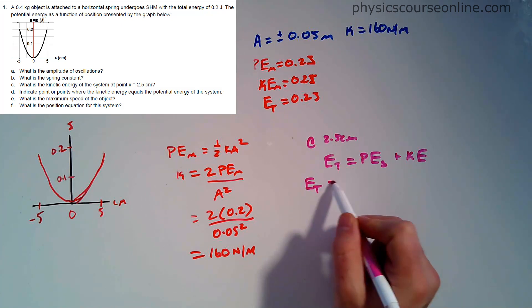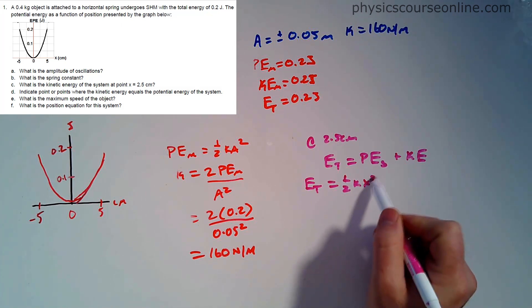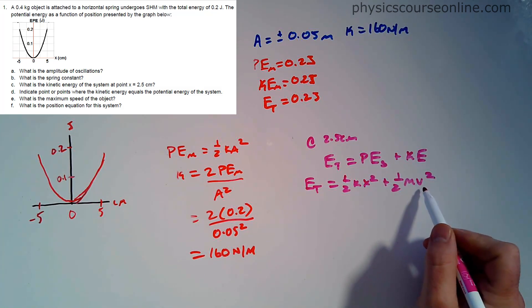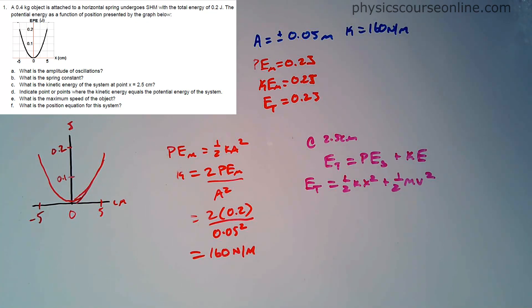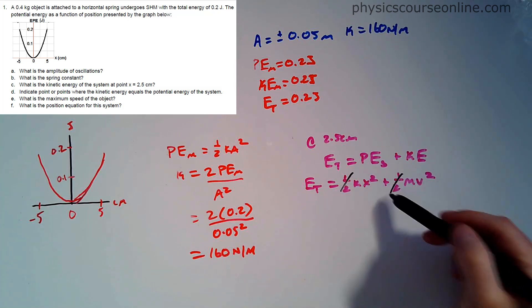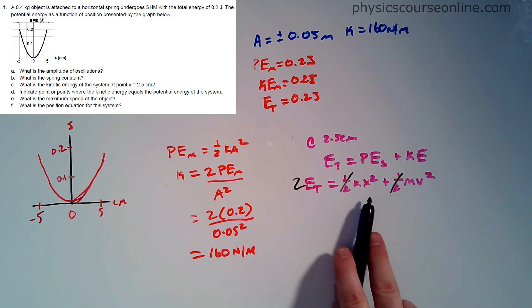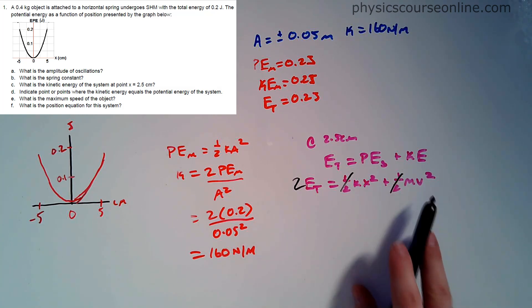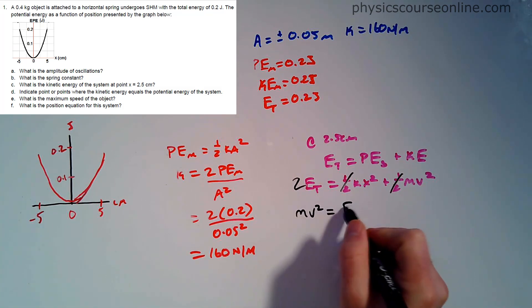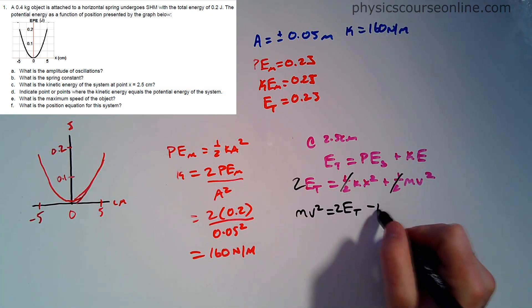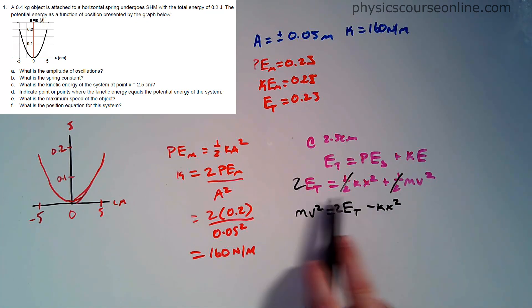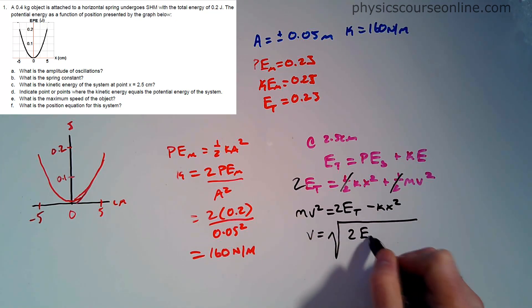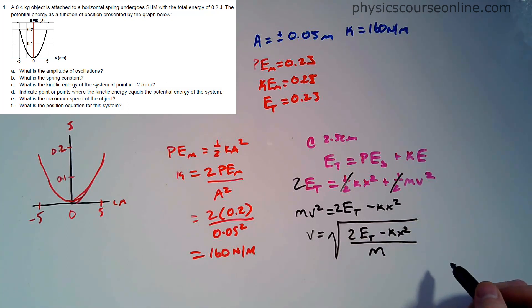We can open both of these up and solve for the velocity at that location. Total energy is equal to one half kx squared plus one half mv squared. Neither of these are maxes, so we don't have a subscript here or here. Multiply everything by 2 to get rid of that fraction. I have mv squared equals 2E total minus kx squared. Now I divide by m and I have to square root the whole thing.